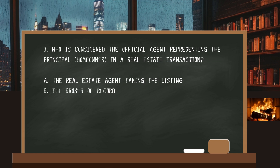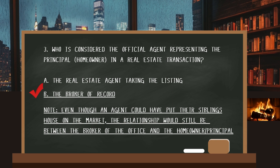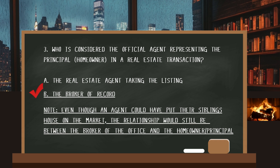Number three. Who is considered the official agent representing the principal — the owner — in a real estate transaction? The answer: the broker of record. Even though an agent could have put their sibling's house on the market, the relationship would still be between the broker of the office and the homeowner or principal.